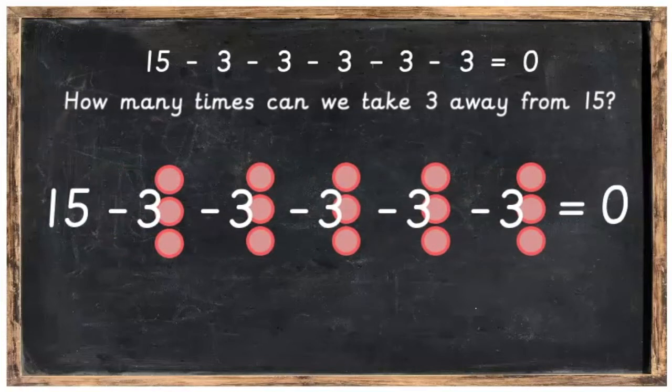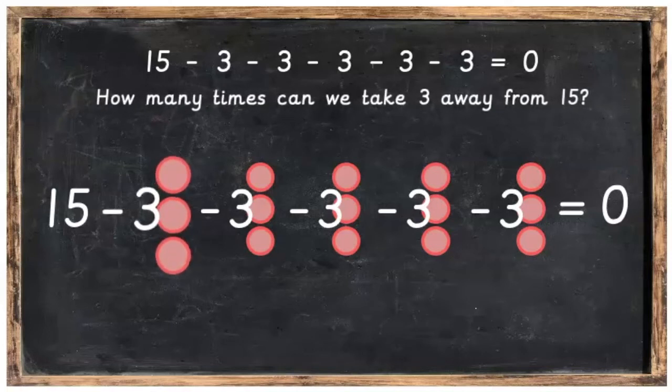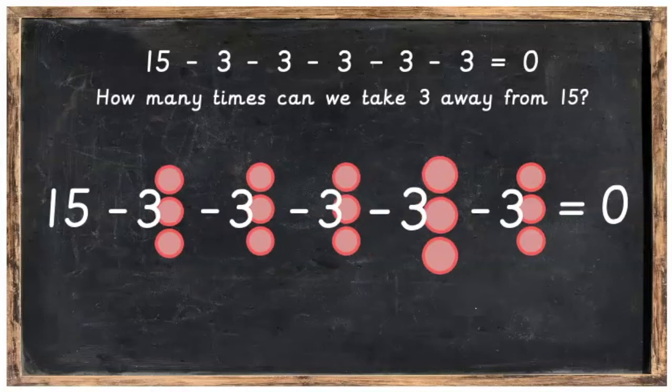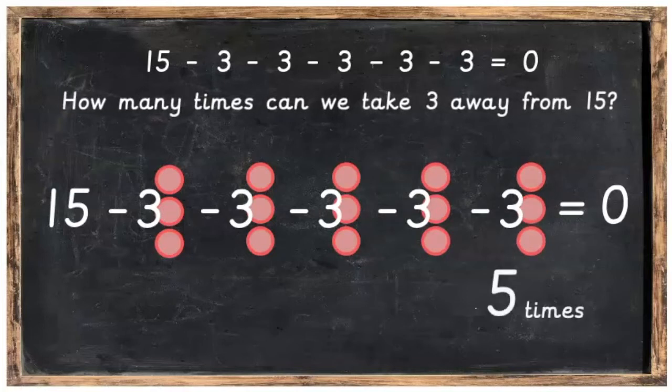How many times can we take 3 away from 15? Well let's skip count by 3's. So we've got 1 time, 2 times, 3 times, 4 times, 5 times. We can take 3 away from 15, 5 times.